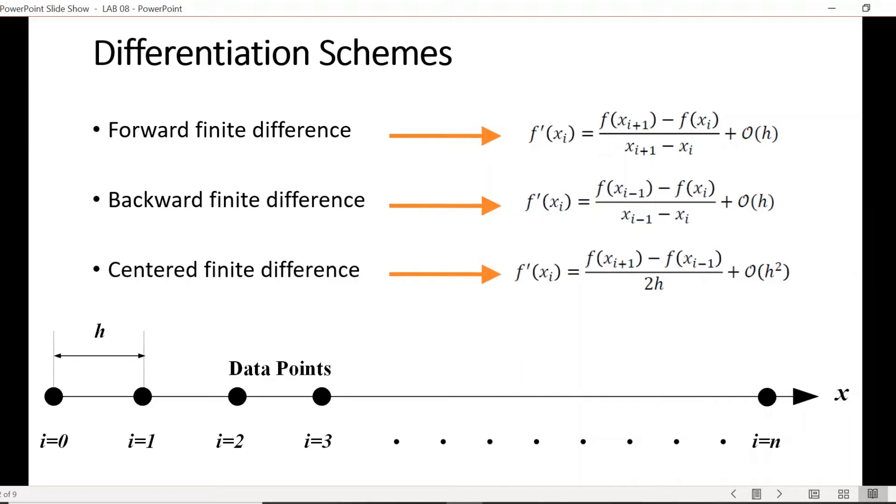For backward finite difference, to evaluate the derivative at point i, we are required to know the value of the function at point i and one step back, that is i minus one. Then in a similar way as forward scheme we can get the derivative. But for the center difference scheme, as the name implies, we need to know the function values at both one step forward and backward data points, and then divide the difference by twice the step size.